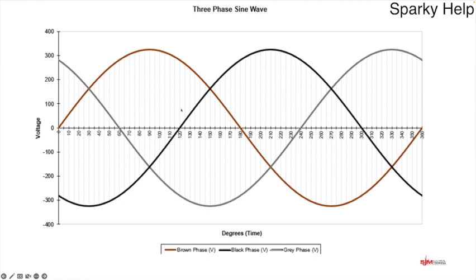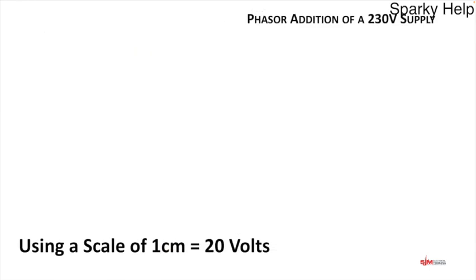Understanding that they are out of phase of each other - identical 230 volt sine waves, identical frequencies - will help us understand how we add them up. The best way to do this is by phasor addition. A phasor is a representation of the sine waves we were just looking at.